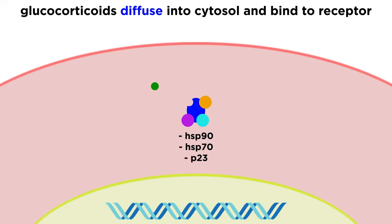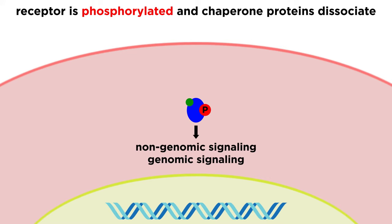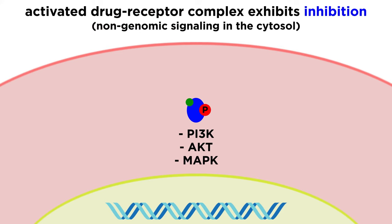Following spontaneous diffusion into the cytosol, glucocorticoids bind to the cytosolic receptor. Upon drug-receptor binding and activation, the glucocorticoid receptor is phosphorylated and the chaperone proteins dissociate. The activated form of the receptor complex exhibits both non-genomic and genomic signaling. Non-genomic signaling occurs with the activated glucocorticoid in the cytosol, where it inhibits PI3K, AKT, and MAPK activity, since these pathways are associated with increased cell growth and proliferation.